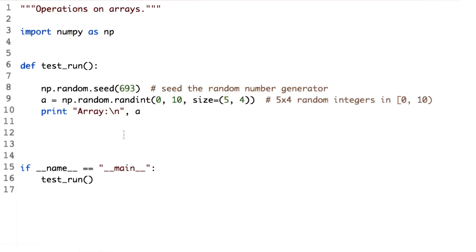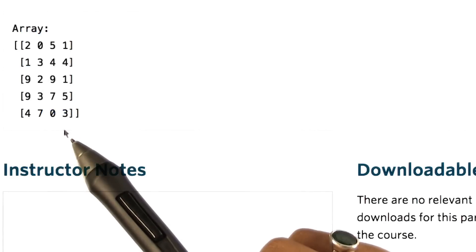Let's run again and see if the output remains the same. You can see that we have the same values for the array.